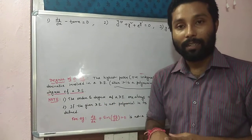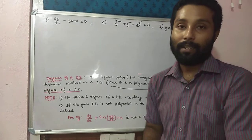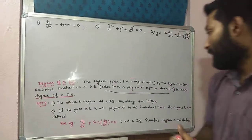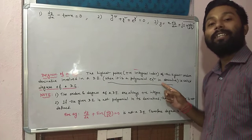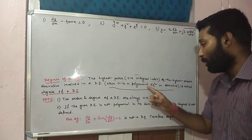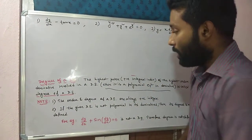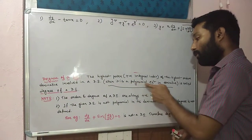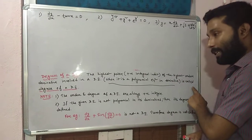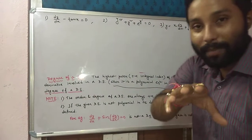Of course, we can find order. If it is a differential equation, we can find order. But if the differential equation is not a polynomial equation in its derivative — I will explain what the meaning of this line is. When it is a polynomial equation in its derivative, that equation's degree can be found. So what do you mean by degree?